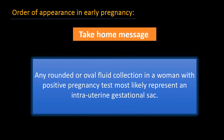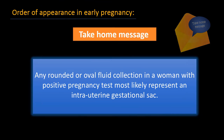Take-home message: any rounded or oval fluid collection in a woman with a positive pregnancy test most likely represents an intrauterine gestational sac.